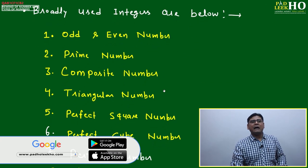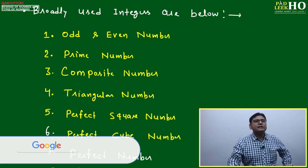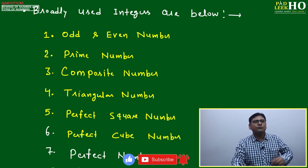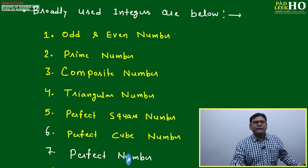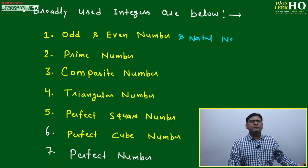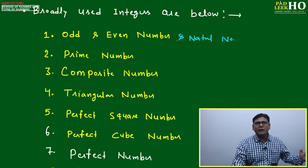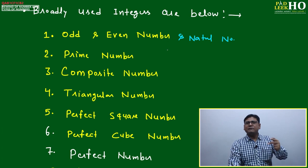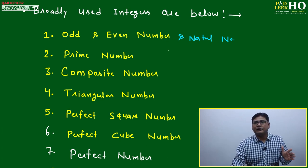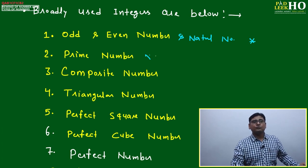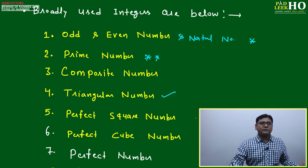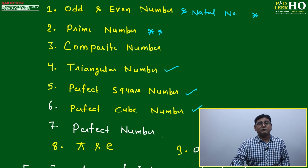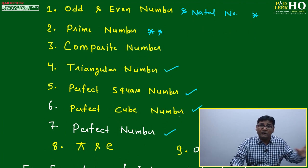Broadly used integer categories, other than special numbers, are as follows. First, odd and even numbers — natural numbers that are odd or even. A separate session will cover properties of natural, odd, and even numbers. Next is prime numbers — most important — understanding primes and their properties. Then composite numbers, triangular numbers — important because plenty of questions come from these in algebra too — and perfect square and perfect cube numbers.